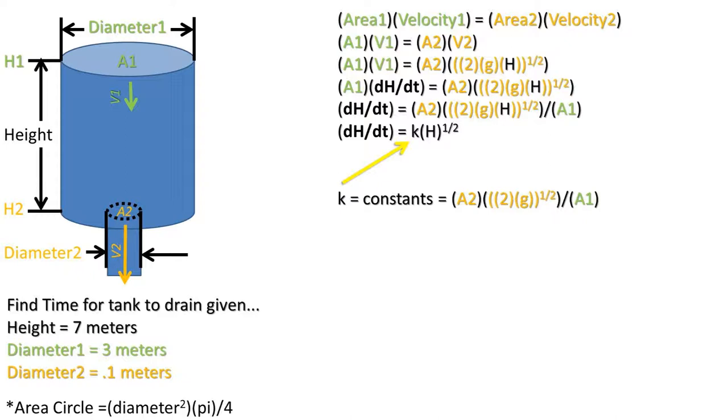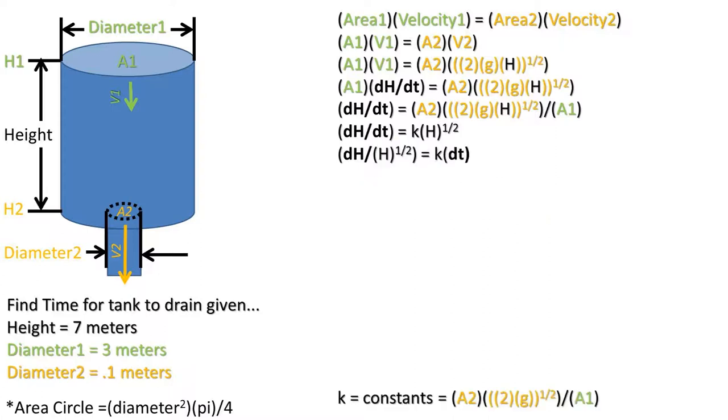Then replace all those values with the letter k in the original equation. We get dh over dt is equal to k times the square root of the height of the water in the tank at initial condition. Next, we will multiply both sides by the change in time, then divide both sides by the square root of height. We do this because we want to have the change in height grouped with the height value.